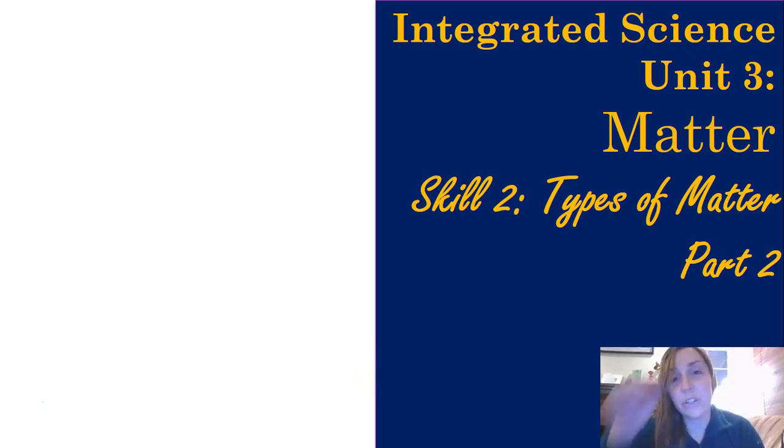Hey guys, these are the Integrated Science Unit 3 Skill 2. We're in the chemistry unit on types of matter part 2. Last set of notes we talked about what an element is, a compound, a heterogeneous and homogeneous mixture, and the differences between the four types of matter.